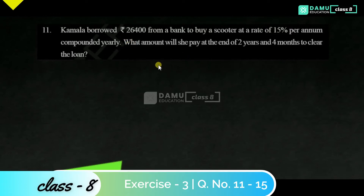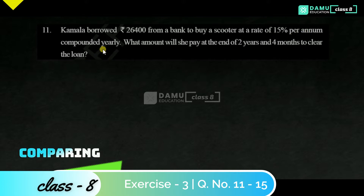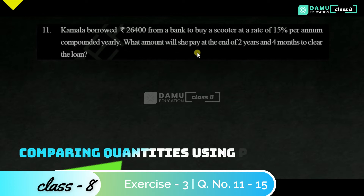Kamala borrowed 26,400 rupees from a bank to buy a scooter at the rate of 15% per annum compounded yearly. What amount will she pay at the end of 2 years 4 months to clear the loan? First we are going to calculate the amount for 2 years, then calculate the amount for the remaining 4 months.